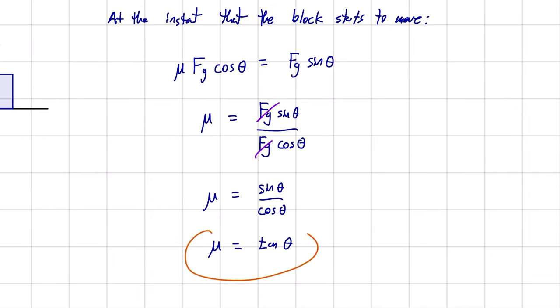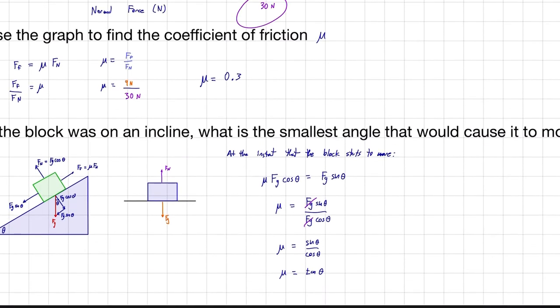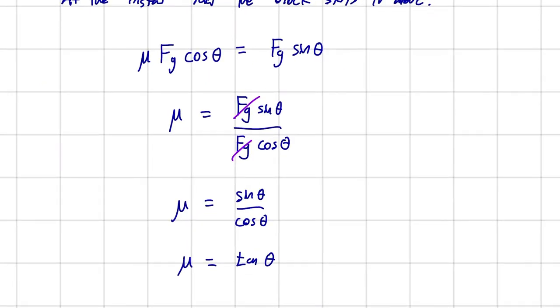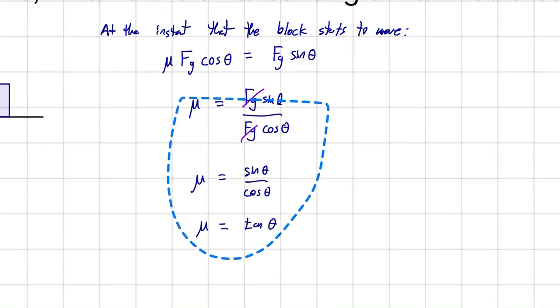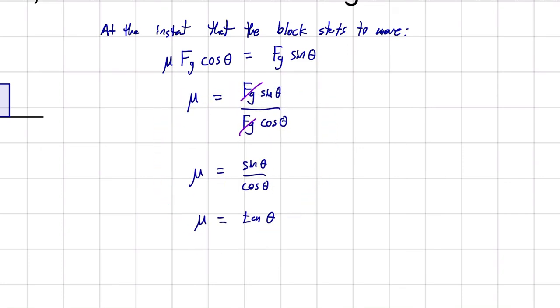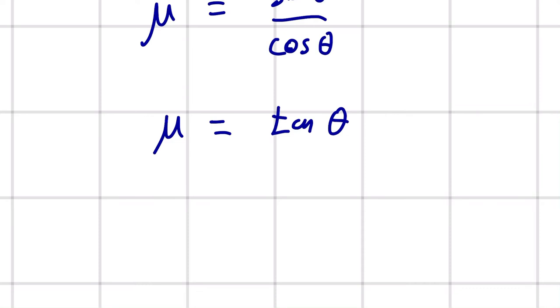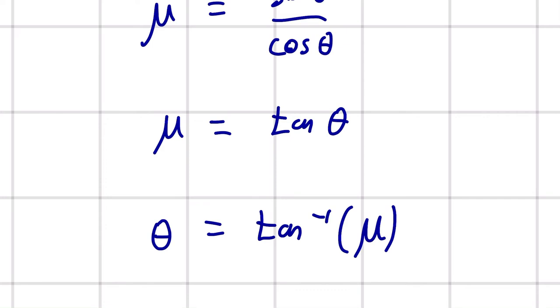So now we have this relationship that's going to be really valuable to us. If we want to solve for theta, we can rearrange this equation to say that theta is equal to the inverse tan of mu. So we kind of have these two equations here.